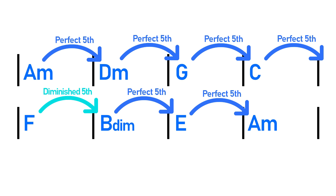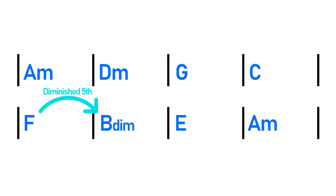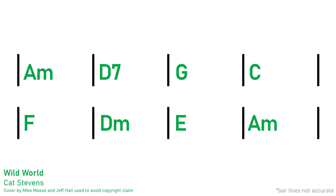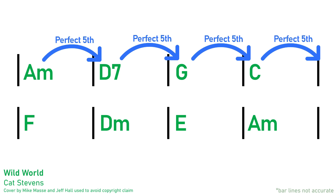In the examples we looked at at the beginning of the video, this issue was solved by placing a diminished fifth so we have enough time to neatly resolve back to our tonic chord. But this isn't the only solution. Cat Stevens' 'Wild World' also uses the circle of fifths progression, but uses a different solution to create the resolution back to the tonic chord. Wild World follows the circle of fifths until a point where we instead get the movement of a third and then a second.